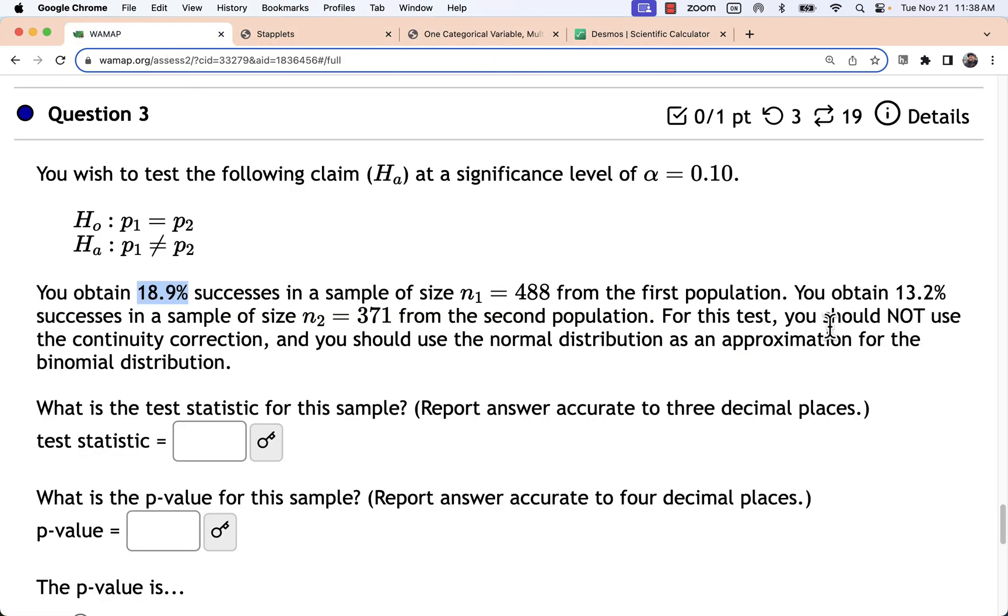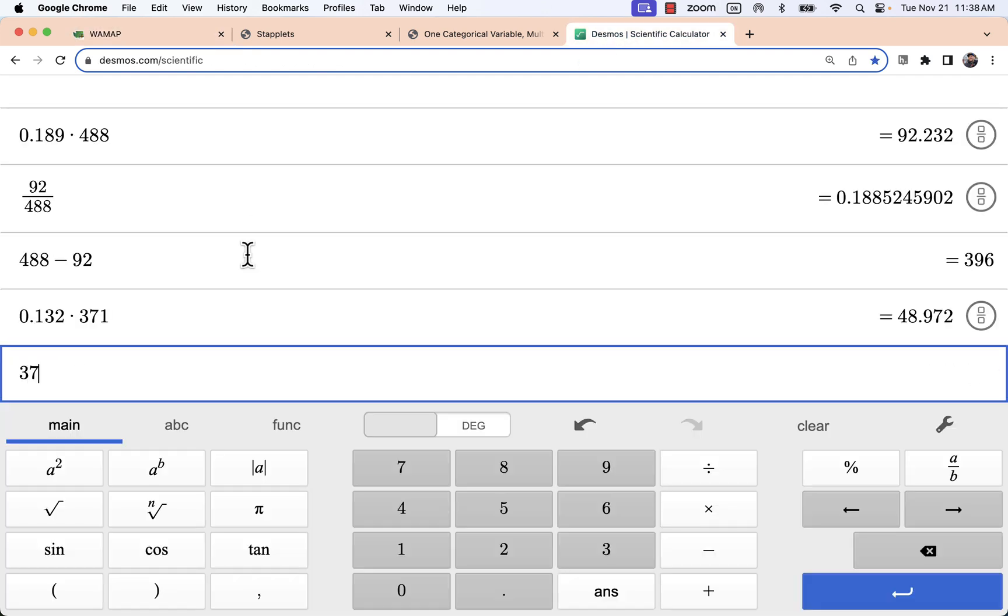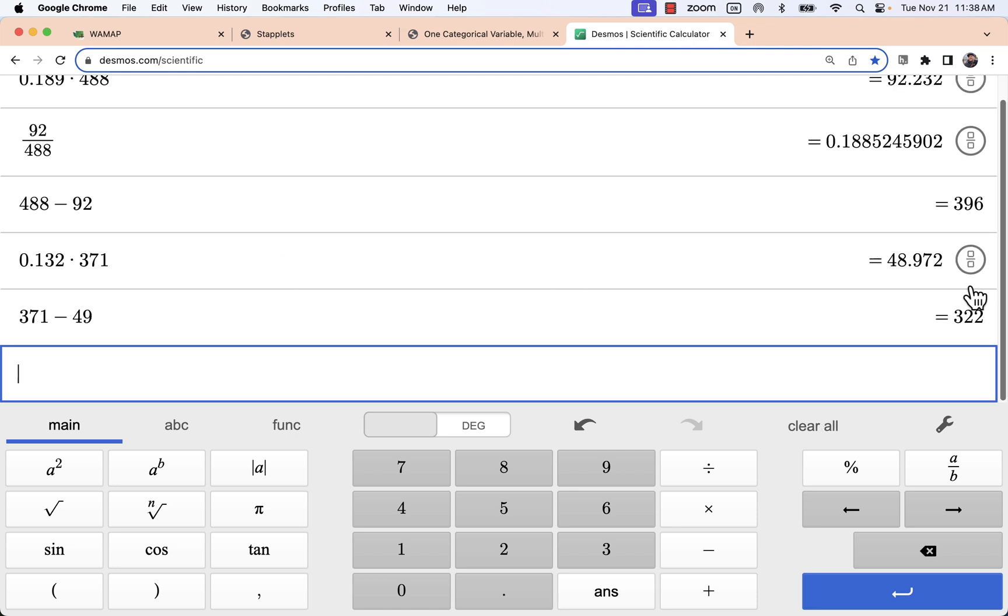And for my second group, 0.132 times 371 and 371 minus in this case I'll look at 49 successes, rounding that up, and 322 failures.